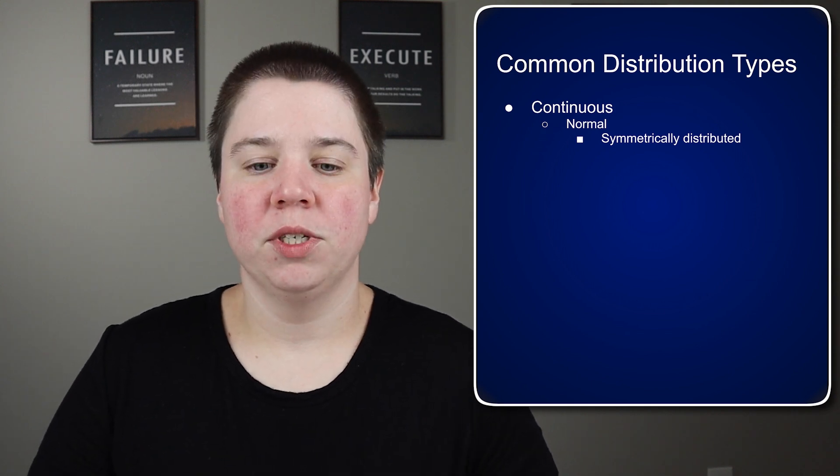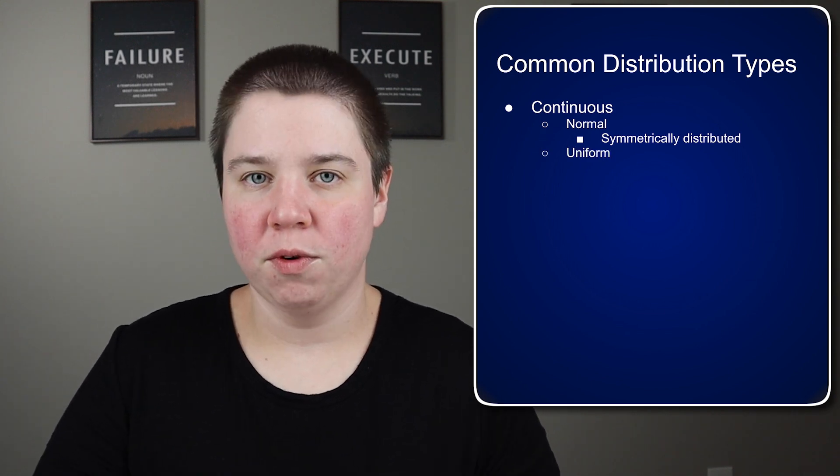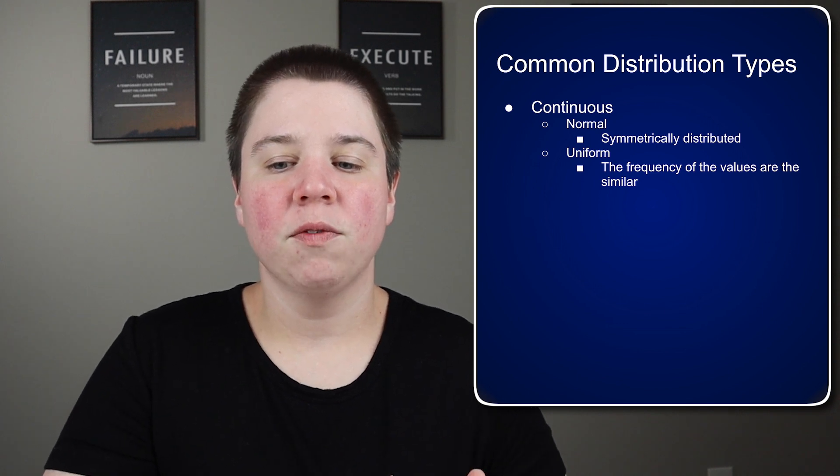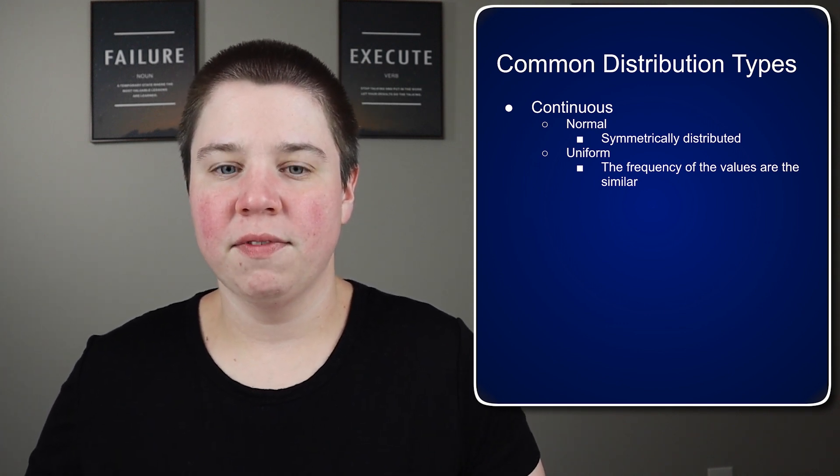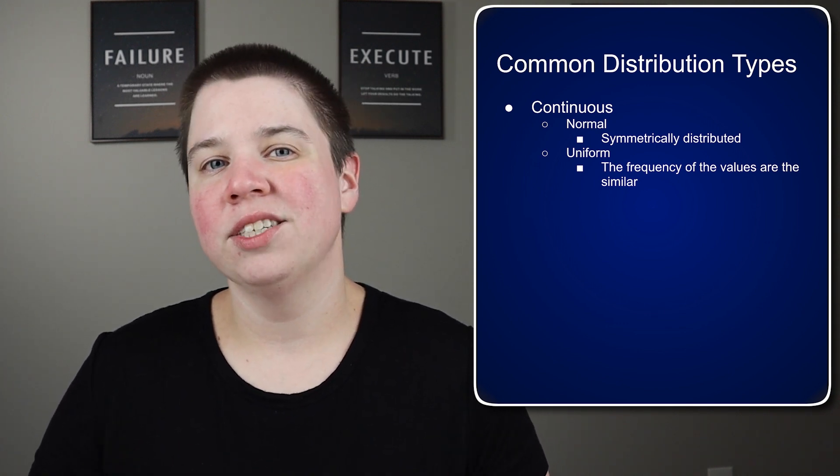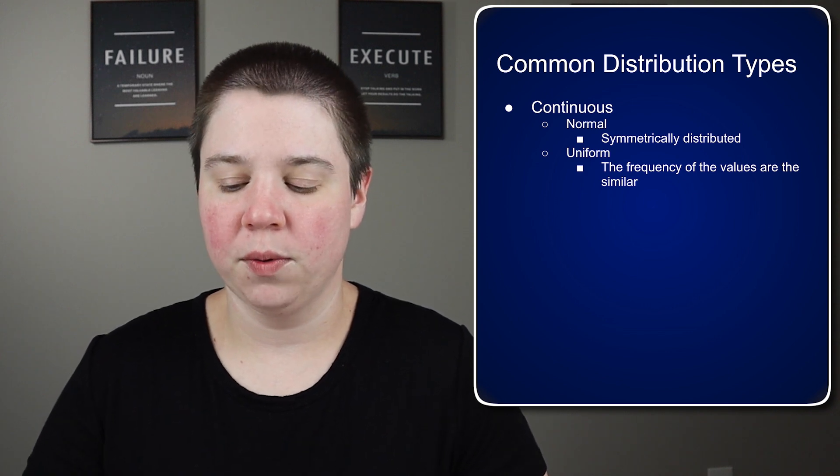There are other distribution types. One example is uniform distribution. This means that the frequency of the different values are very similar. So what you essentially get is what looks like a square wave.